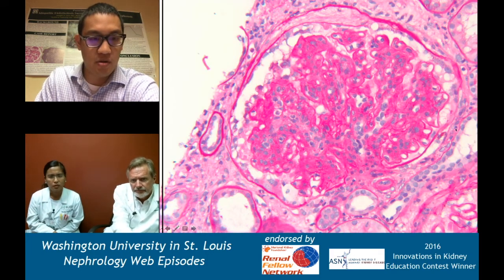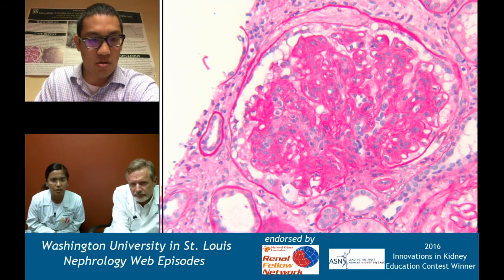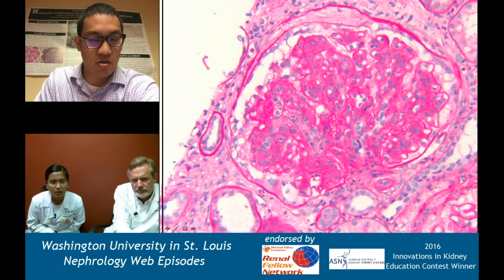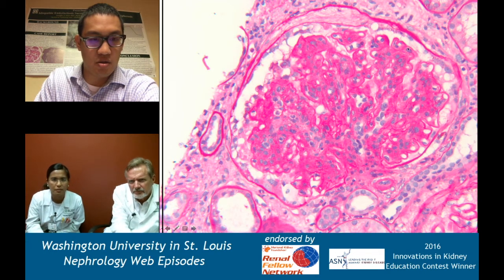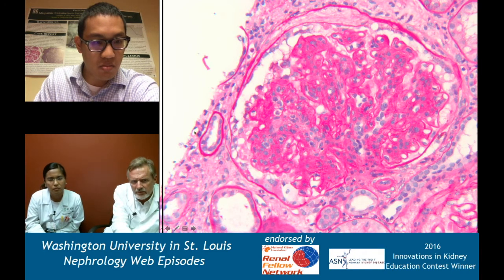Here's a different stain — this is now a PAS stain, still high power. There's a lot of pink staining material within the mesangium, signifying mesangial expansion. Now you can really see the thickened capillary loops highlighted. The tubules around it look okay, though some may be a little atrophic with thickened basement membranes — some might be chronically damaged.